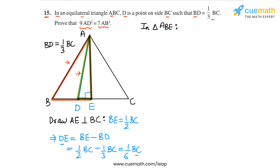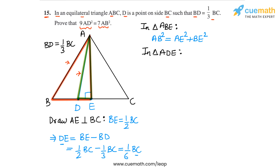In triangle ABE, AB is the hypotenuse, so AB squared equals AE squared plus BE squared. Then in triangle ADE, the hypotenuse is AD, so AD squared equals AE squared plus DE squared.